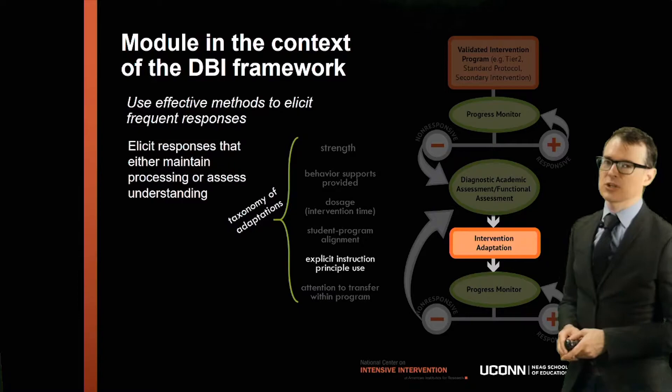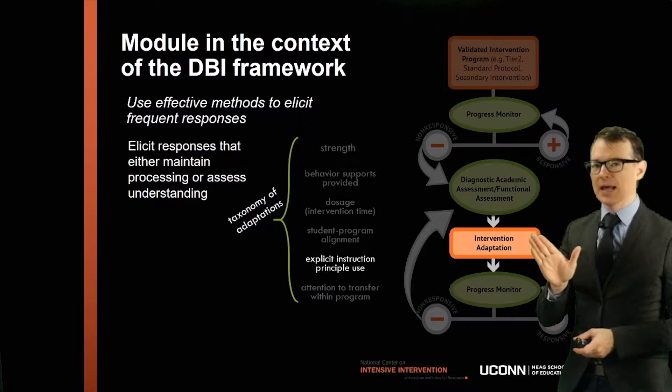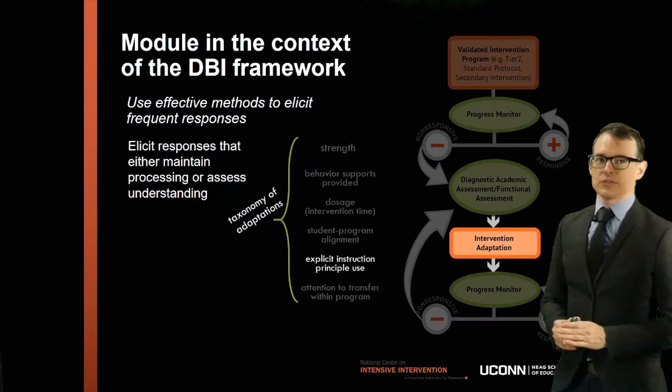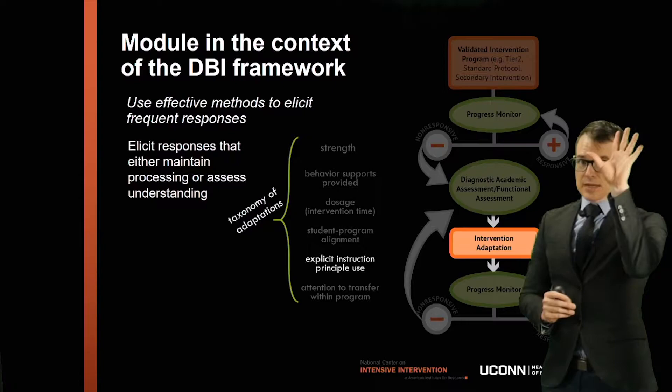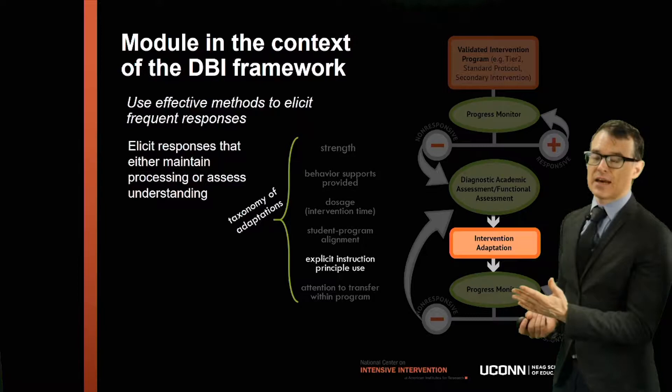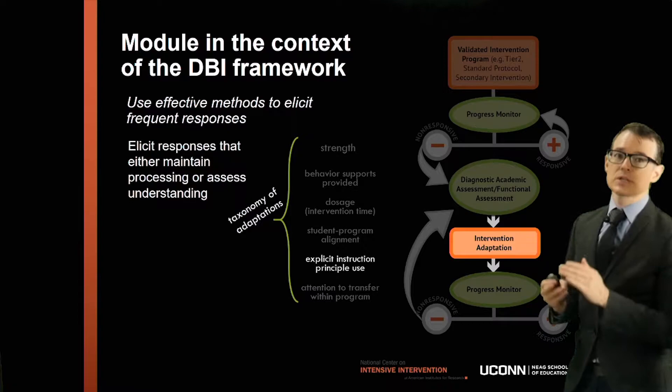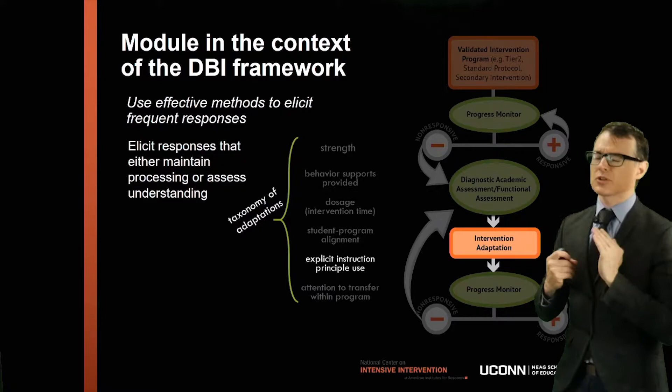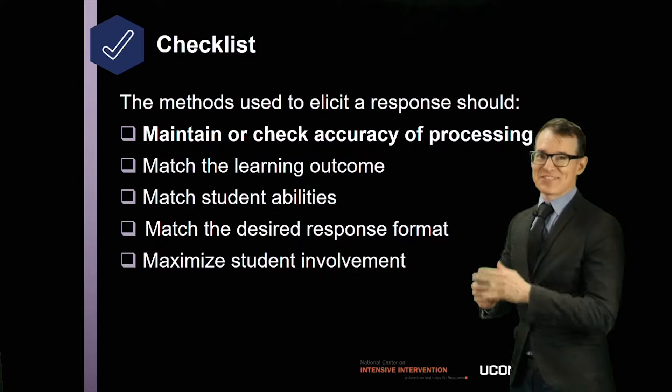Before we get into all of that, let's put this in context in terms of the DBI framework. We're thinking about explicit instruction as an intervention adaptation—something you do when you realize that the secondary prevention program isn't working for students. It's possible the program isn't working because it doesn't have enough explicit instruction, or you haven't been using those techniques enough. The adaptation you make is to use the explicit instruction principles more, and we'll talk about listening responses as a critical aspect of that intervention adaptation.